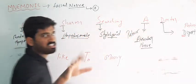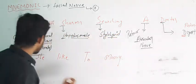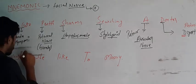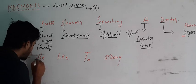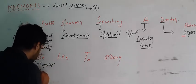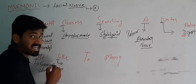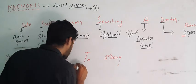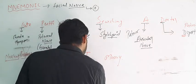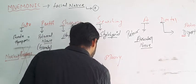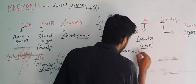This is for the nucleus. Cute Preeti Sharma searching a doctor — because C likes to marry. So C means Superior Salivatory nucleus. L means Lacrimatory nucleus. T means Tractus Solitarius. And M means Motor nuclei.